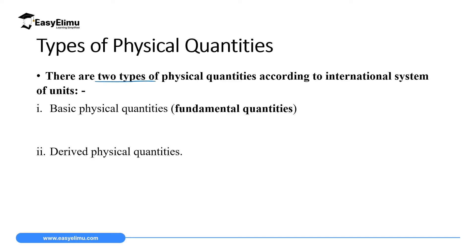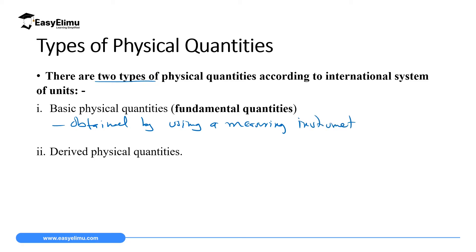We have two types of physical quantities in measurements. These quantities can either be obtained by doing a direct measurement using a measuring instrument, or you can obtain them by dividing or multiplying existing basic quantities. The ones obtained directly by using a measuring instrument are called basic quantities. For example, if you want to know the length of your door, you take a meter rule and measure directly — whatever you read is a basic quantity. Or you take a stopwatch and read time.